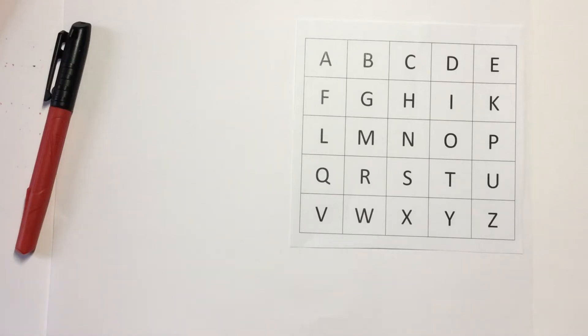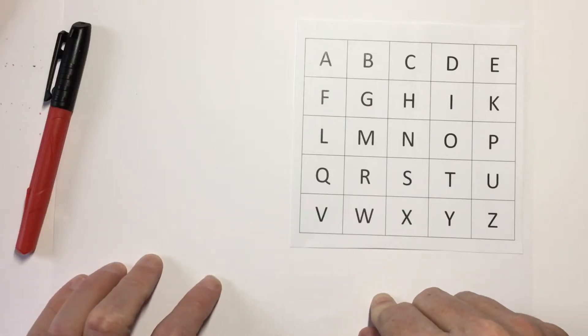The Playfair Code is an example of a symmetrical encryption polygramic substitution diagram code. All that just makes it sound much harder than it really is. It's really not that difficult. It was developed in 1854 by a guy named Charles Whitstone, but it was used extensively by Lord Playfair, which is why it is called the Playfair Code.